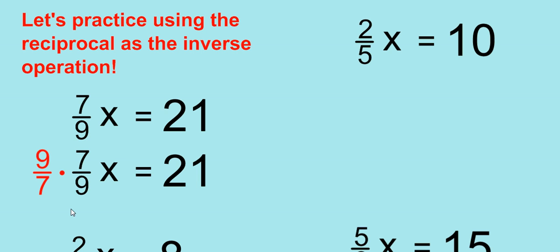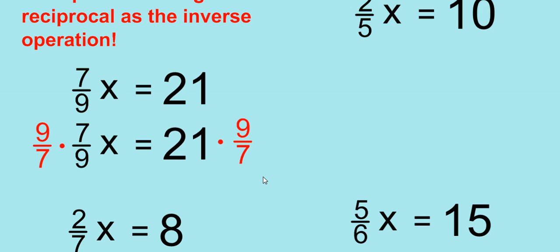That's right. We multiply by the reciprocal, 9/7. And if we do it to one side, we must do it to the other. And that's the multiplication property of equality. Then you would just simplify and get your answer.